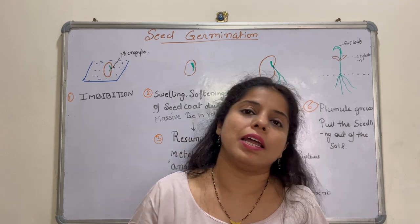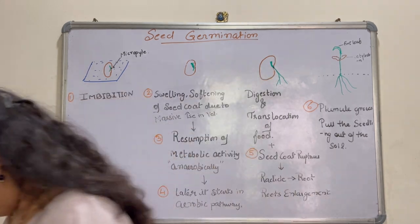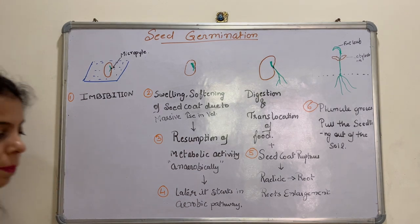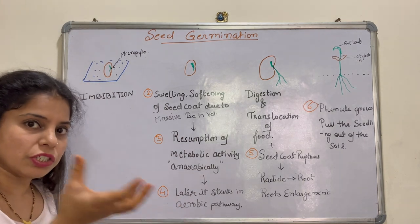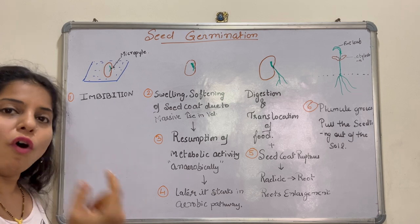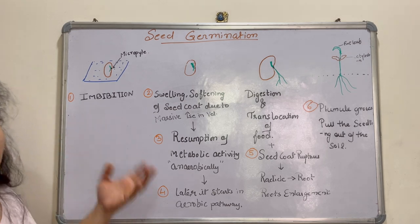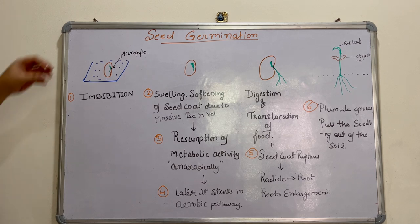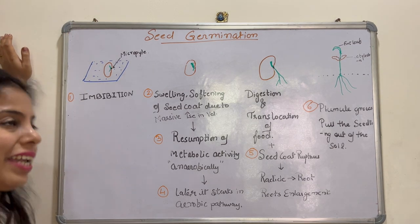Ultimately, we get a small plant. The first primary requirement of seed germination is water. Seed is dry, of course, but the seed also has a need for water. So you have to provide moisture.